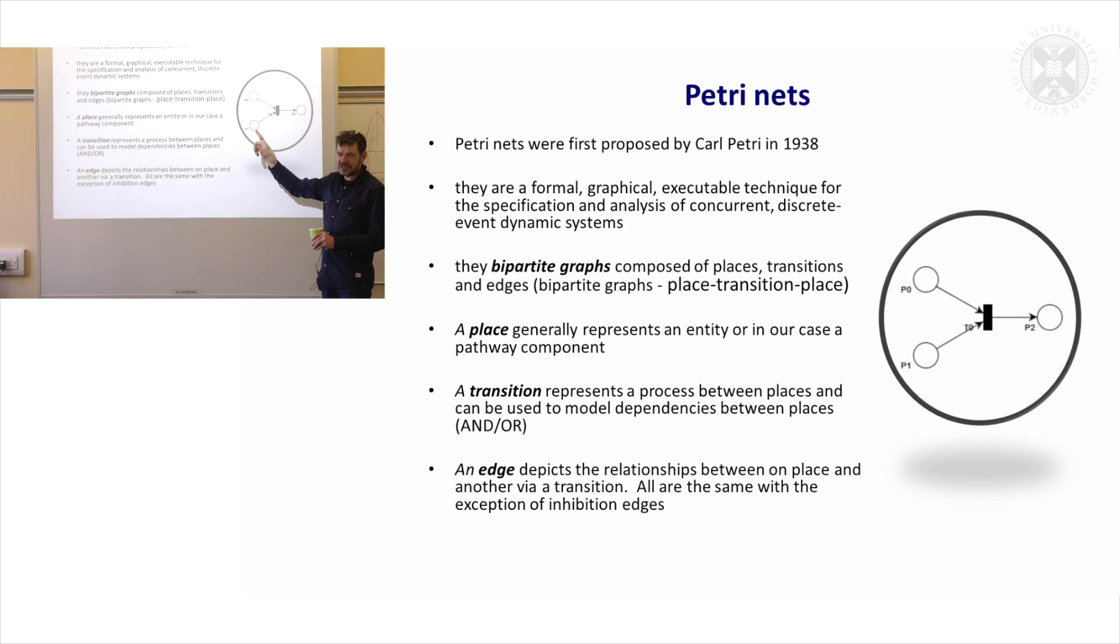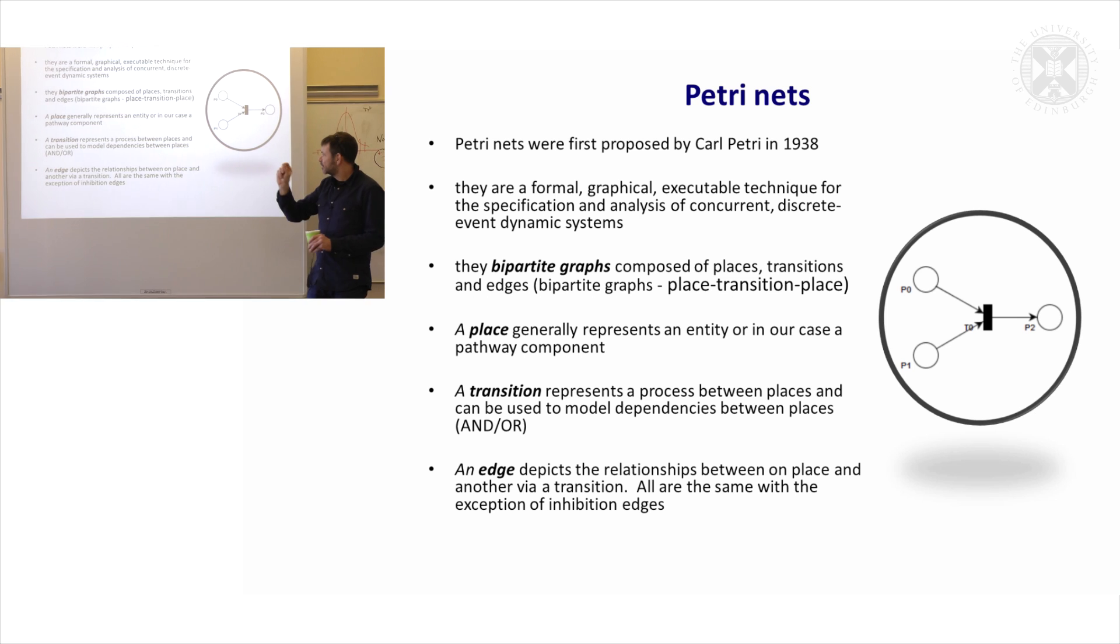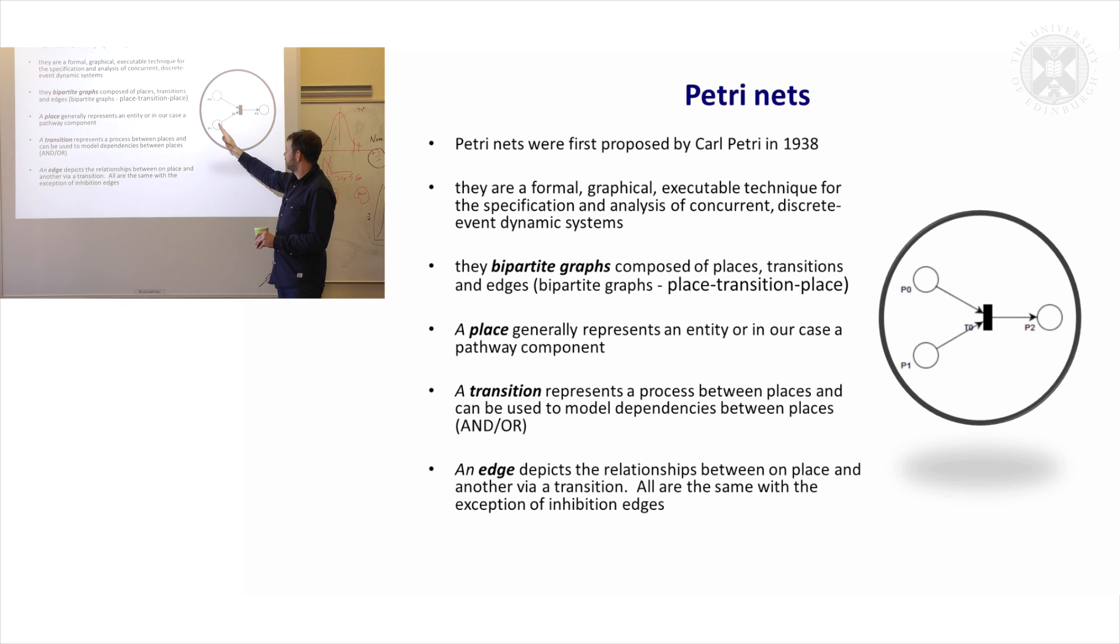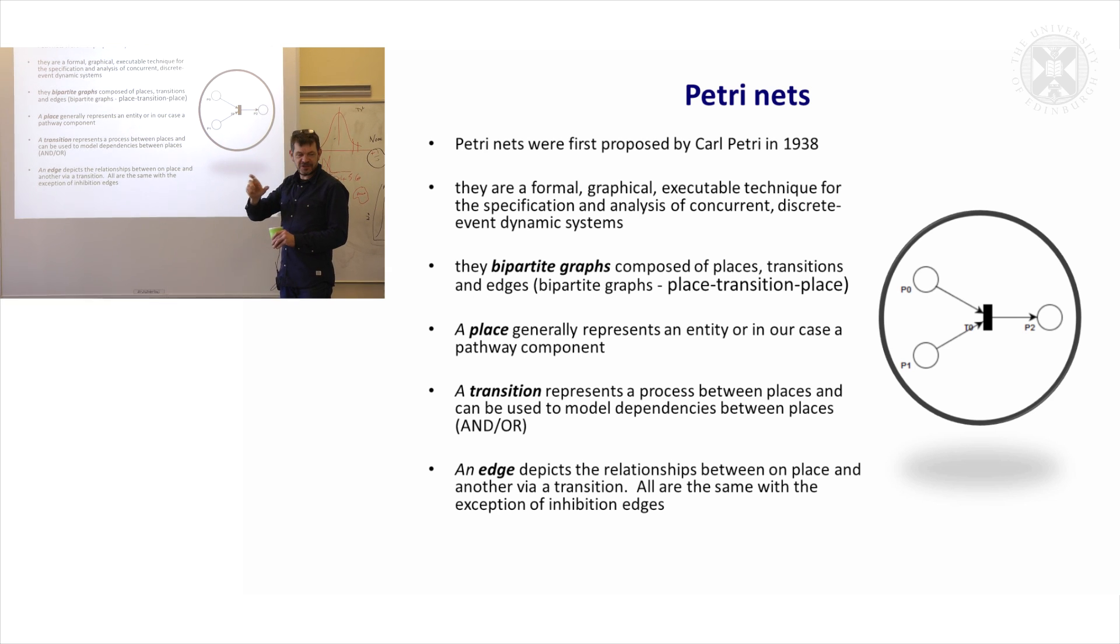So these are things called bipartite graphs. A bipartite graph is something where you must have place, transition, place, or place, transition, place. That is the structure of it, it's bipartite and everything must alternate in the way that it works.